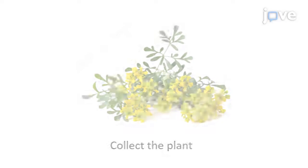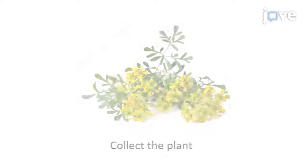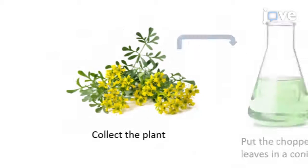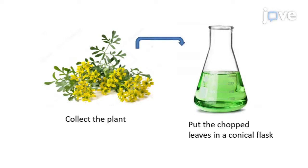First, collect Ruta graveolens leaves during the spring and summer months. Put 250 grams of chopped leaves in a conical flask and add 1 liter of distilled water, boil, and filter as described in the manuscript.